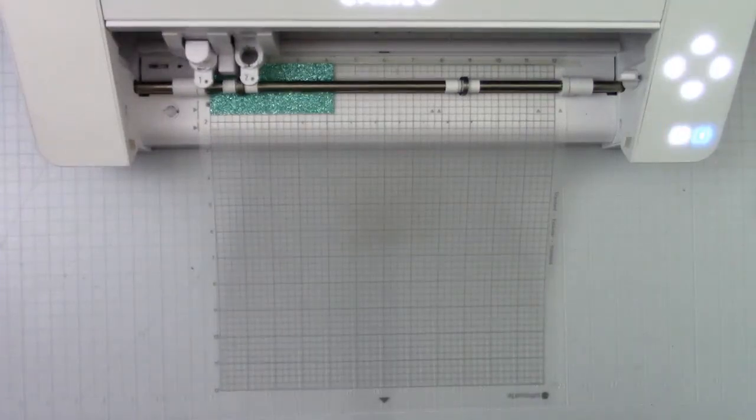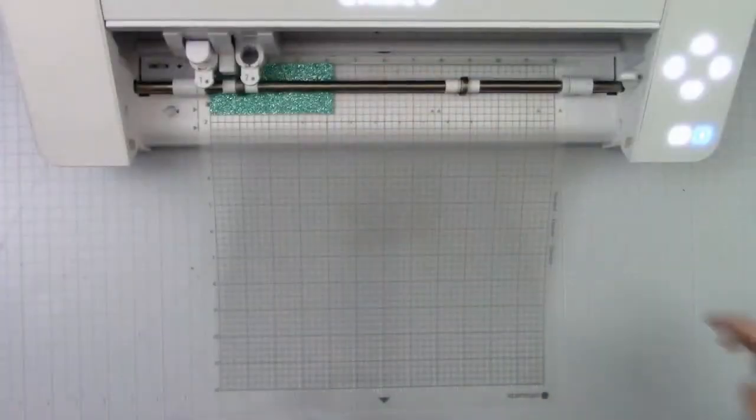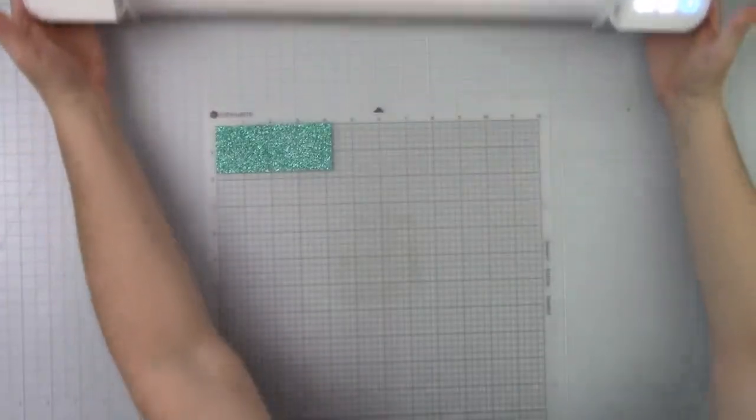And then we can come on back there. Hi. So if you're just joining us, we are working with the July bundle and we are working with scraps of HTV. So, you know, maybe you are in a bind and you have an order that's due tomorrow and you realize, oh shoot, I don't have any more of that glitter HTV I just used, but you still have a little piece that you weeded off. Then you can still actually use that. So let's go back to our machine here.